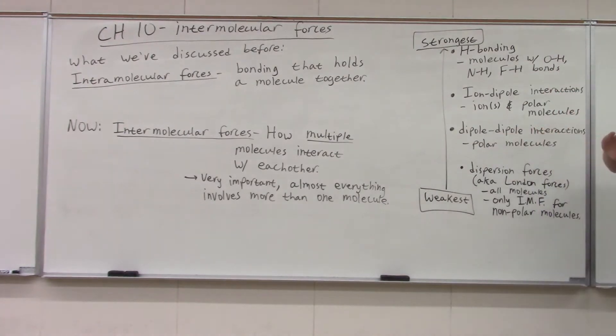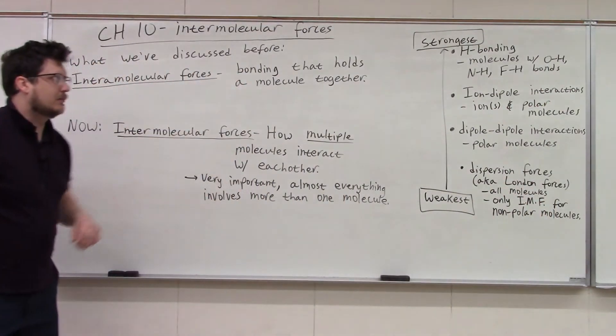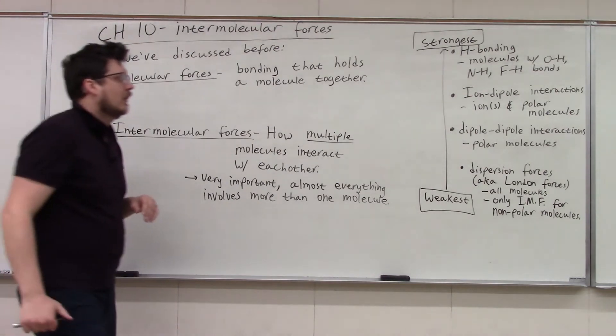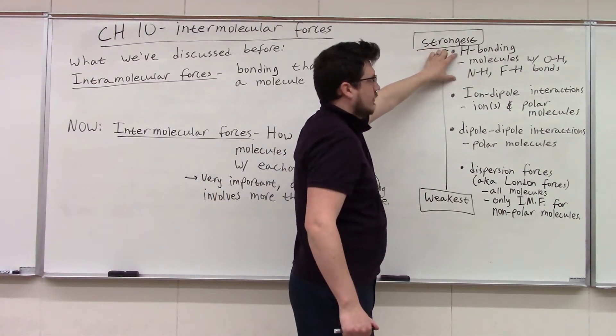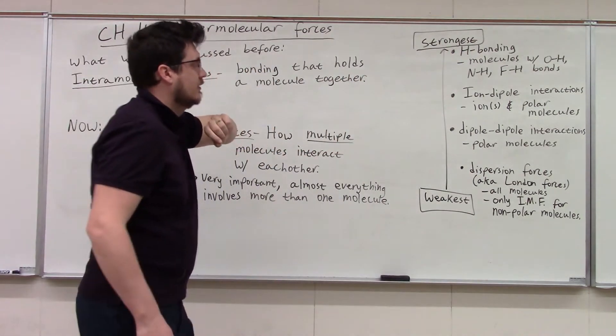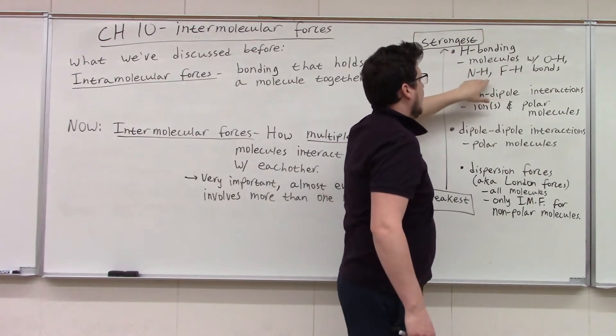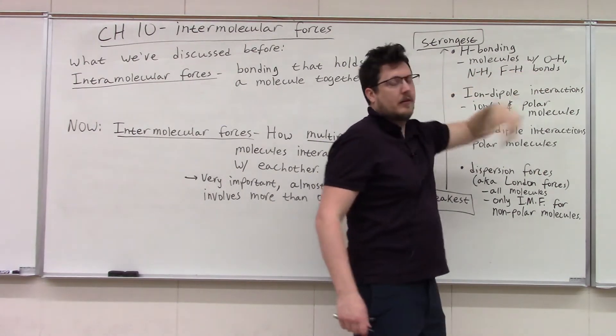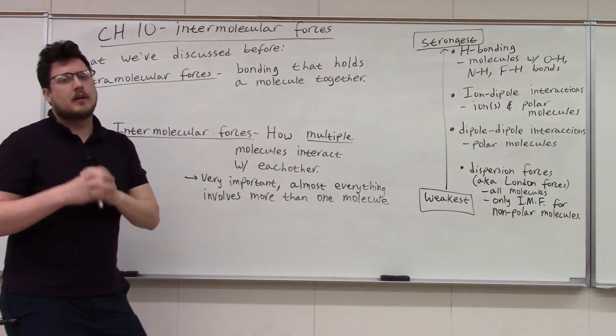We are gonna talk about four different types of intermolecular forces. Technically ion-ion is also one that would be even stronger than H bonding, but it's not in this chapter. Up here, hydrogen bonding, also known as H bonding, is our strongest intermolecular force we're going to discuss in this chapter. Any molecules that have an OH group or an NH bond or an FH bond on them are gonna have hydrogen bonds—those are gonna have stronger intermolecular forces.